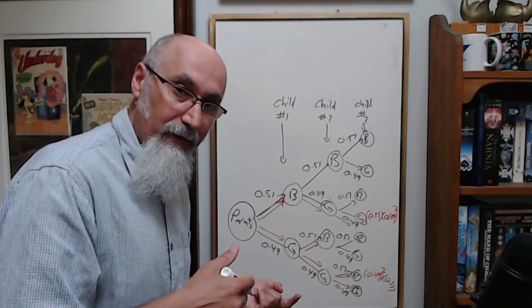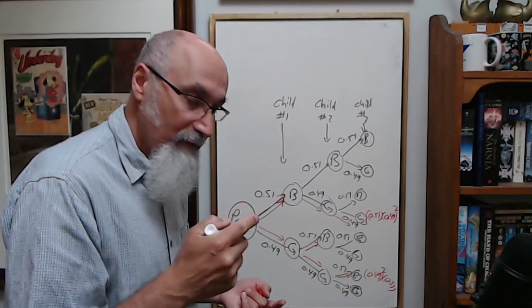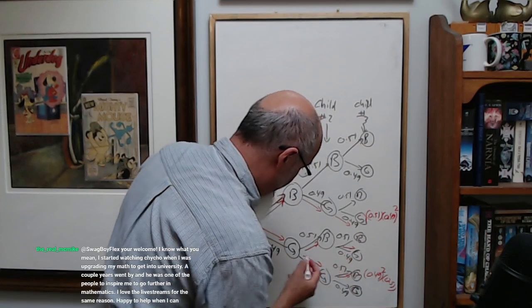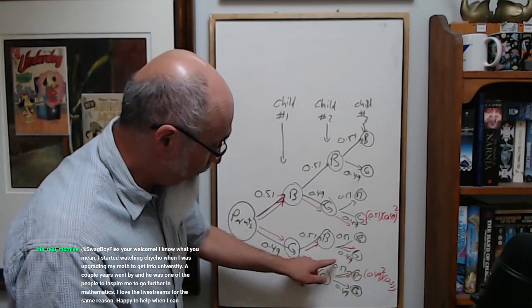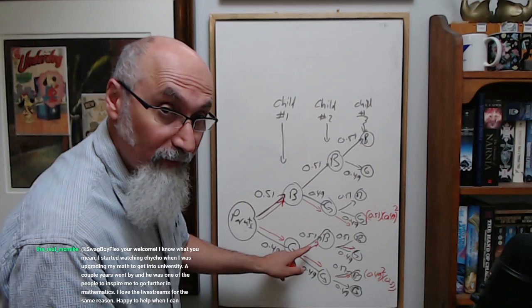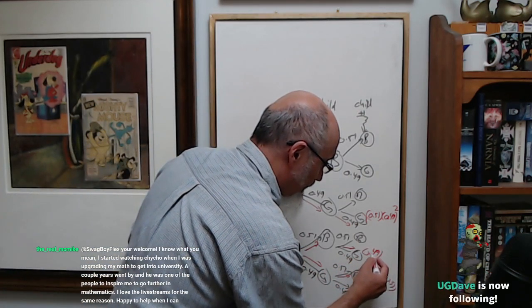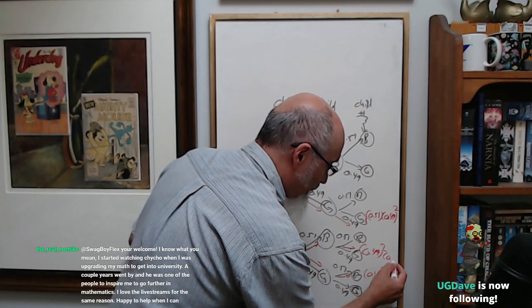So then you go down this one. Over here you got 0.49 times 0.49 times 0.51, so 0.49 squared times 0.51. Okay, so what we have right now is there's three different paths for this family, these parents, to have two girls and one boy, and these are the paths that you have.